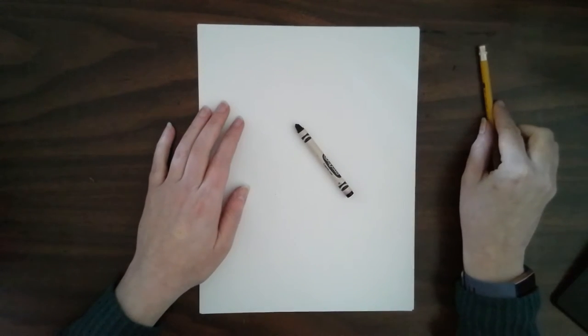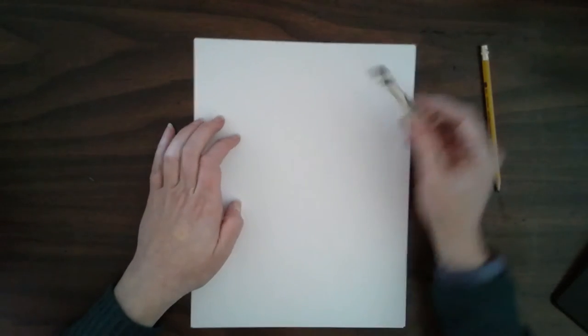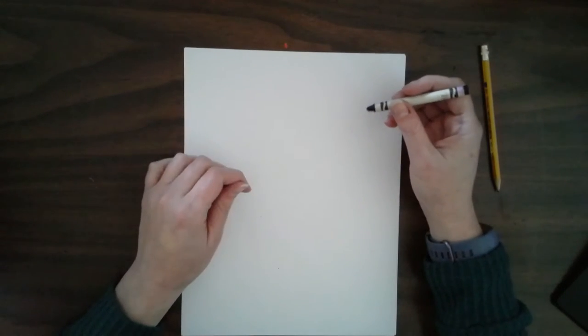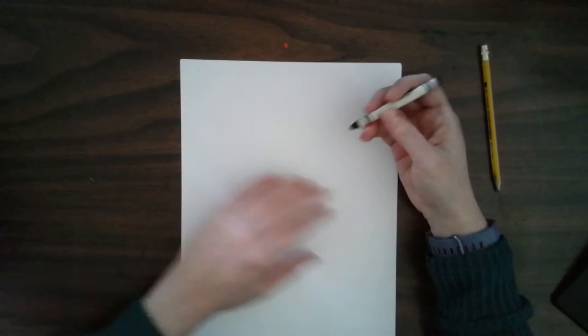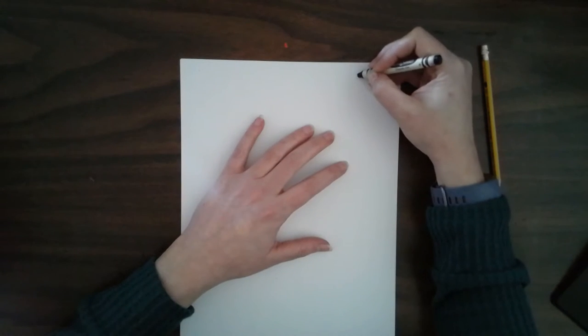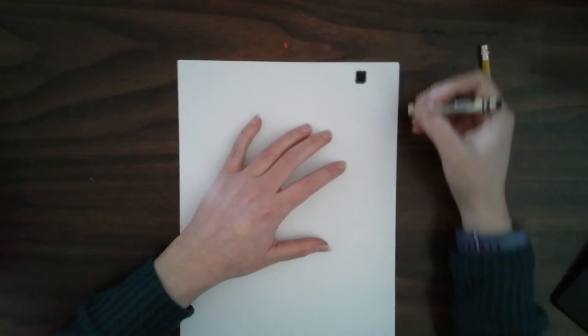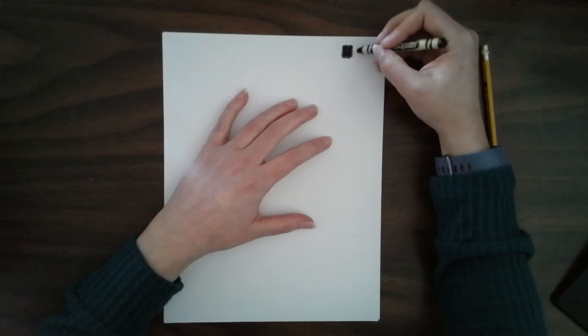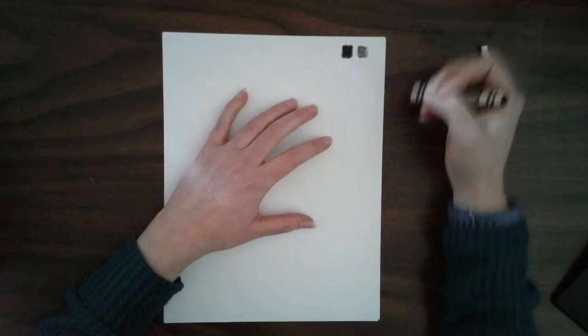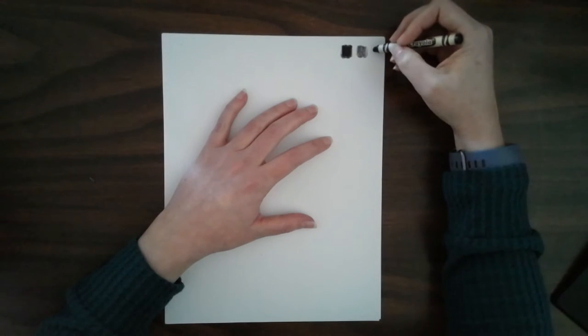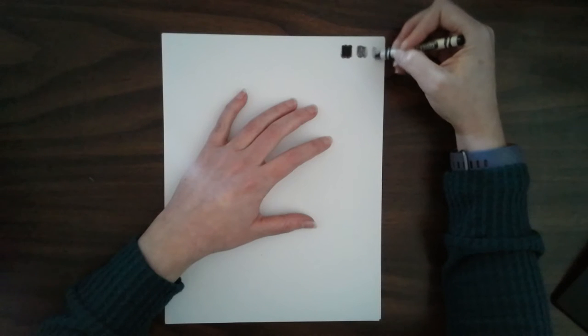So before we start our drawing, let's practice some of our values. If you take your crayon and you press really hard with your crayon, you're going to get a dark value. If you just press a little hard, you're going to get a medium value. And if you press really softly with your crayon, you're going to get a light value.